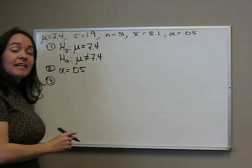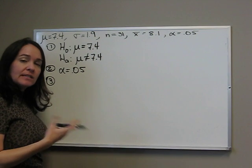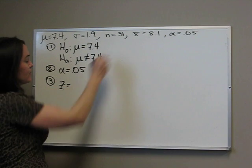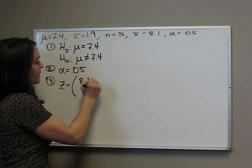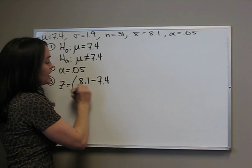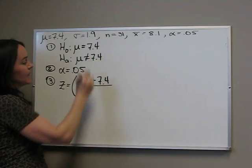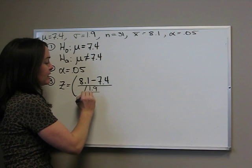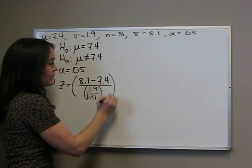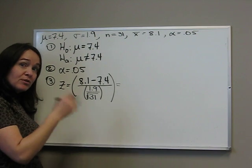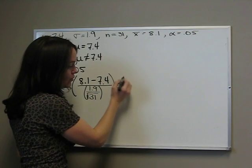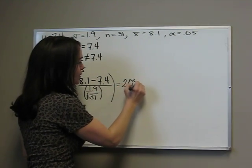Step three is our z-score. Since we're doing a z-test, it's a z-score. So z equals x-bar minus mu divided by sigma divided by the square root of n, which was 31. Remember, you divide first, subtract, and then you divide it again, and you get 2.05.